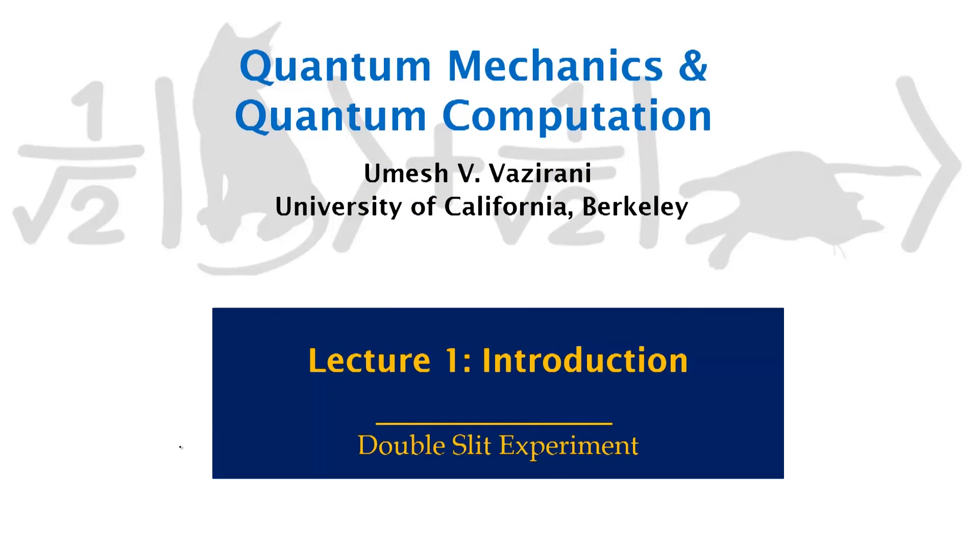Quantum mechanics is a deeply troubling scientific theory. It challenges some of our most basic notions about physical reality. For example, it's inherently probabilistic. But more importantly, it forbids us from measuring certain physical quantities very precisely. For example, it forbids us from measuring both the position and momentum of a particle perfectly.